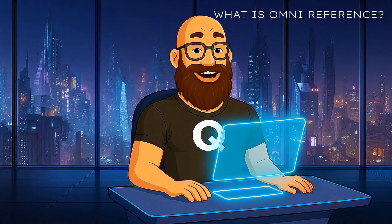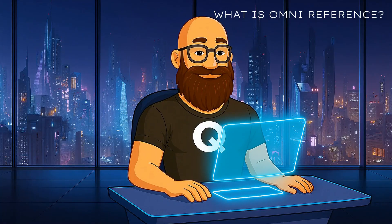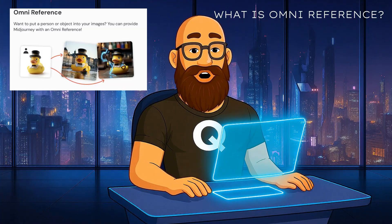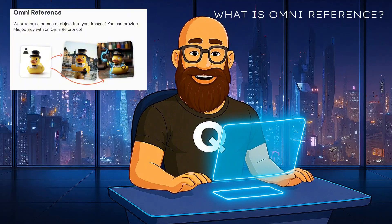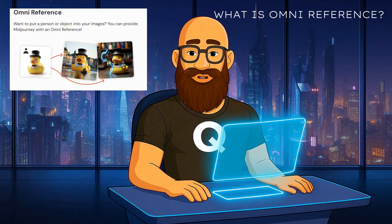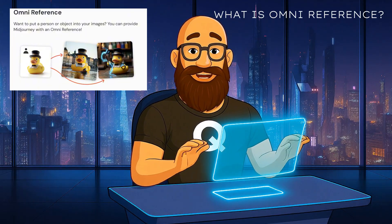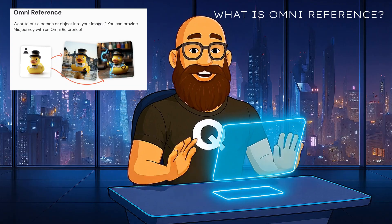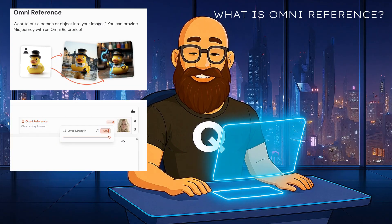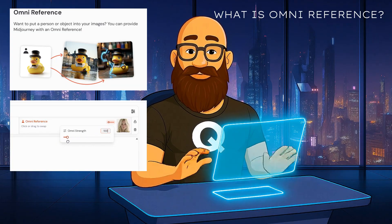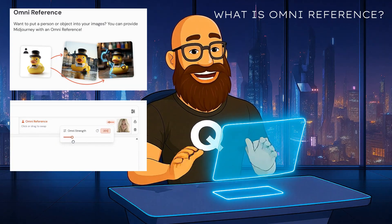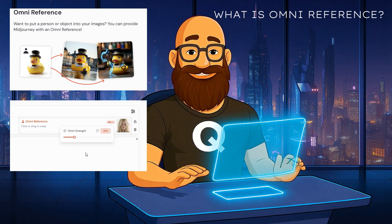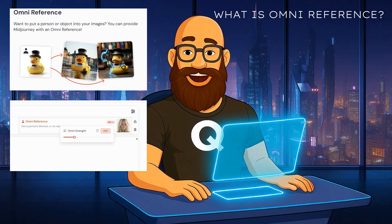What is Omni Reference? In Mid-Journey version 7, it's a way to lock a specific character into your creations so they stay consistent across every scene. You can adjust the Omni Reference weight with a slider between 1 and 1000 to have that character subtly influence the image or appear as close as possible.